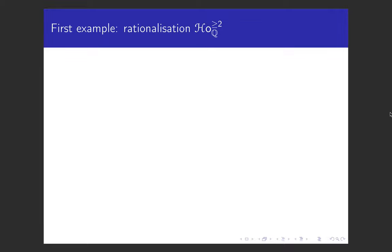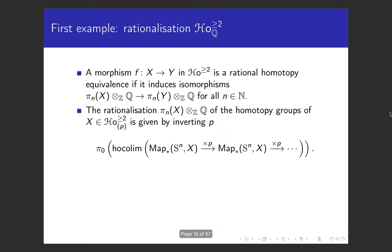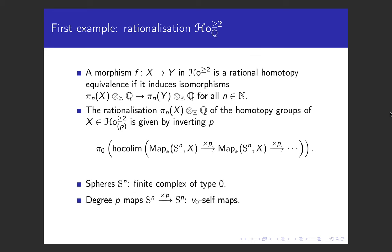Let us first consider a familiar example, namely rationalization. A morphism of simply connected homotopy types is a rational homotopy equivalence if it induces isomorphisms on rational homotopy groups in every degree. To rationalize the homotopy groups of a P-local homotopy type, we just need to invert P — namely the induced maps on mapping spaces by the degree P-map on spheres. In this situation, spheres of various dimensions are finite complexes of type 0, and the degree P-maps are V0 self-maps. The rationalization, denoted here by H0, is the localization of the infinity category of simply connected P-local homotopy types where we invert rational equivalences.